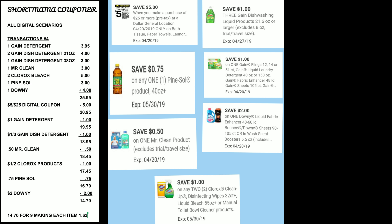I'll show a close-up of all the coupons: the $5 off of $25, 75 cents for Pinesol, 50 cents for Mr. Clean, $1 off of two for Clorox, $2 off for Downy, $1 off for Gain Flings, and $1 off of three for Gain dish liquid. Remember, you're getting two of the 21 oz Gain dish liquid at $2 each and one 38 oz Gain dish liquid at $3. All together they equal $25.95.